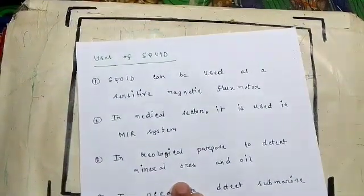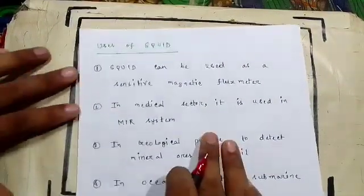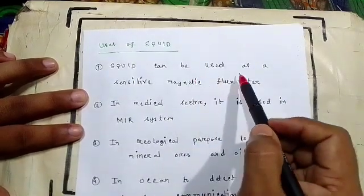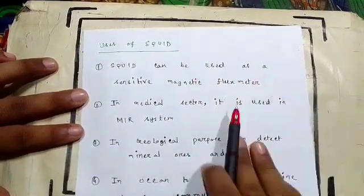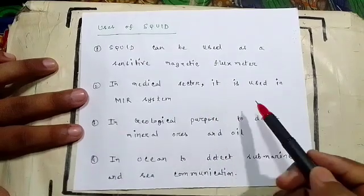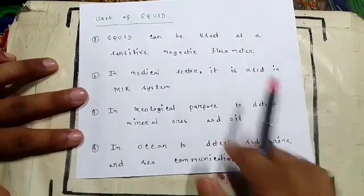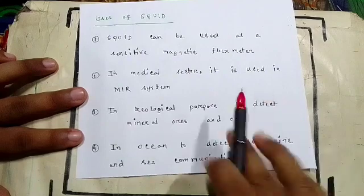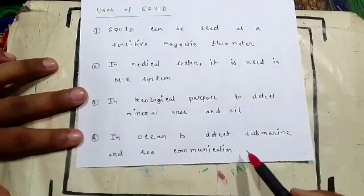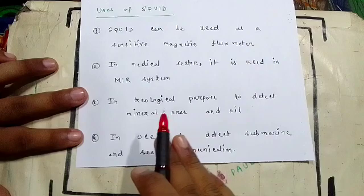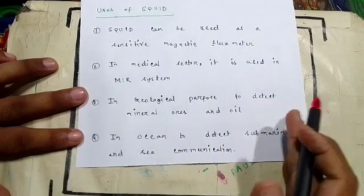Now I will give some uses of SQUID. SQUID can be used as a sensitive magnetic flux meter. In the medical sector, it is used in MRI systems. For geological purposes, it is used to detect mineral ores and oil. In the ocean, it is used to detect submarines and for sea communication. These are the uses and applications of SQUID.